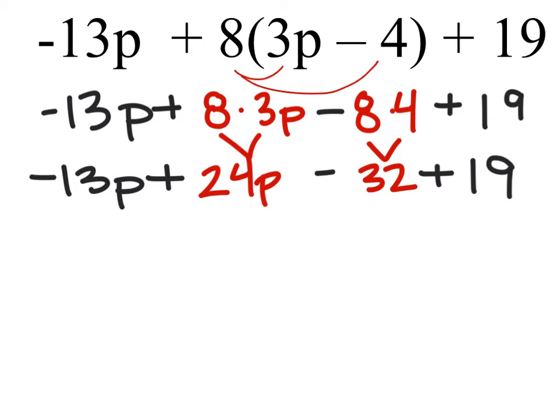Now what we're going to do is, I'm going to look at the term farthest to the left, and I see that it has a p with it. This term is a negative 13p, and I can combine that with this term right here that has a p as well, this plus 24p.